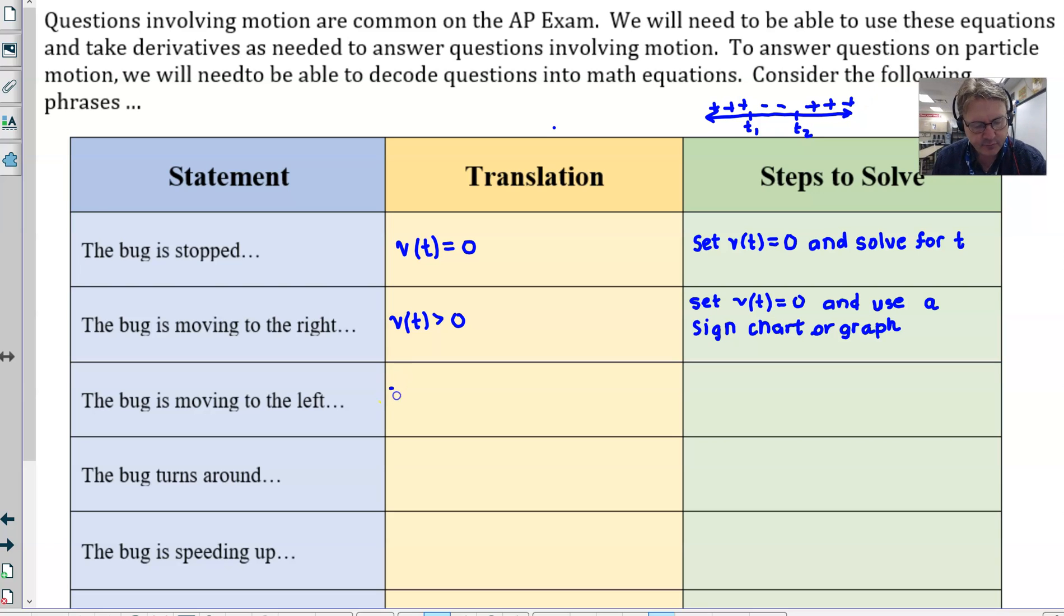If the bug is moving to the left, pretty much the same situation except the velocity is going to be negative. As far as the steps to solve, see the above. It's exactly the same thing. You're going to set v(t) equal to zero and use a sign chart or graph if it's a graphing calculator problem. What about if the bug turns around? What does that mean? Well, the translation just simply means that v(t) has changed signs. So you're again always looking at the velocity. It's amazing how many things the velocity will tell you about the motion of this bug. So again, you're going to do the same setup. You're going to take your velocity, set it equal to zero, put together your sign chart, and then you can see whenever we have a change in signs, you've got that situation where your bug or your particle has changed directions.